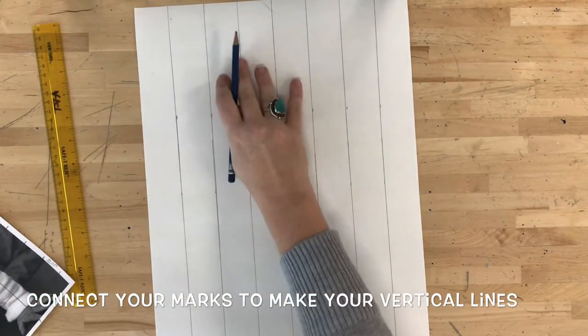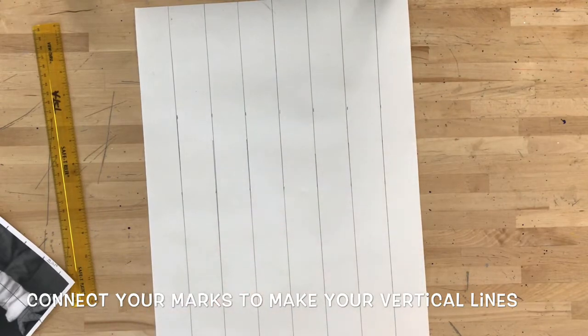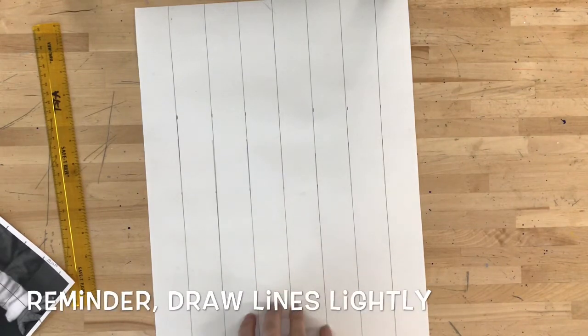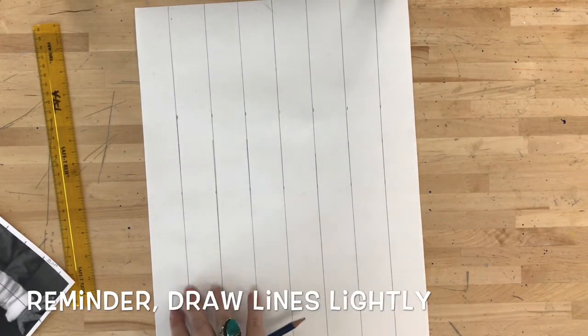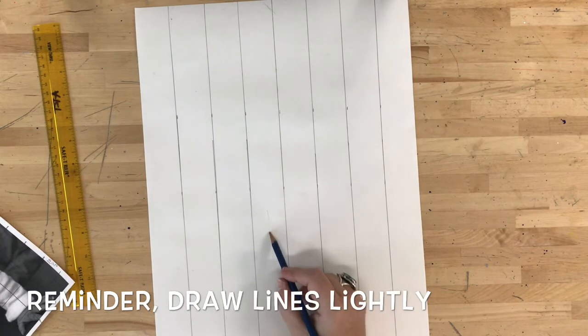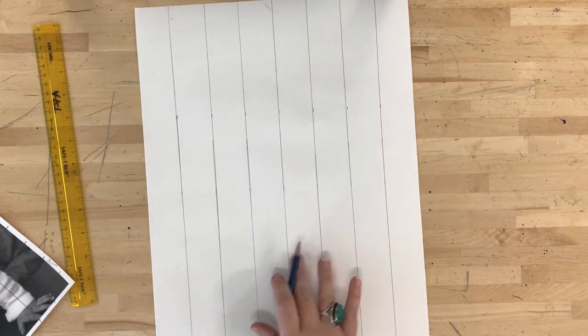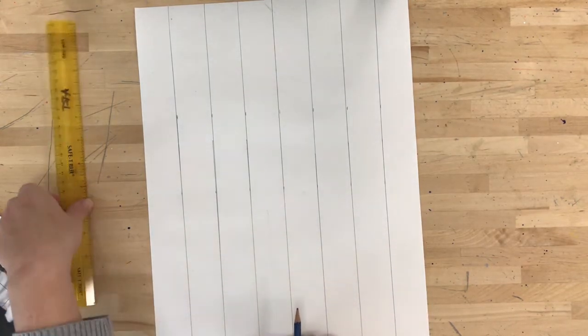Now that I have my vertical lines, it's time for me to make my horizontal lines. And just another reminder, I am drawing my lines on here very dark so it shows up in this video. When you do this process, you want your lines to be super, super light because these grid lines are going to be erased after a while.